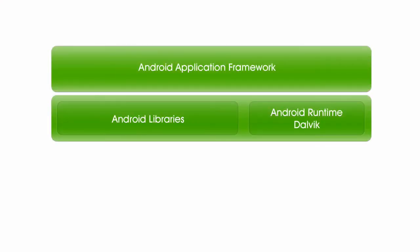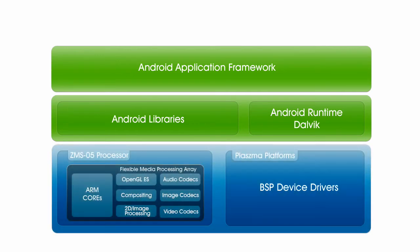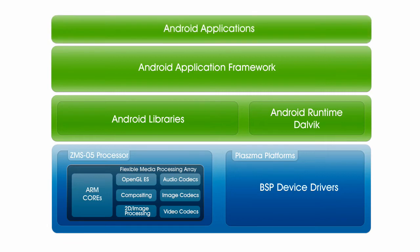The Android on Plasma software architecture takes the Android application framework, libraries and runtime, and integrates them with the core Plasma software. This Plasma core provides seamless access to the performance and features of the ZMS05 processor and the Plasma platforms. This means that standard Android applications you have developed should need no modification to benefit from the 3D and media performance of the ZMS05.